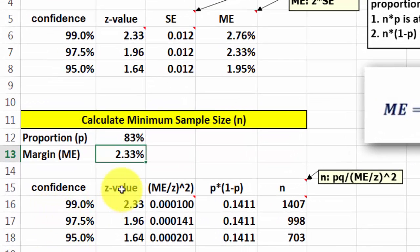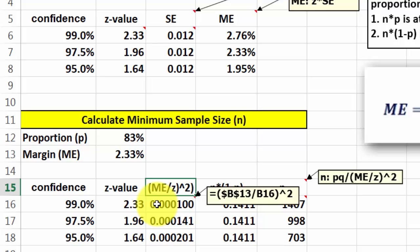First we calculate the z-value, that is NORM.S.INV again. Then we do the following calculation: margin of error divided by z, to the power of 2. So in formula, that would be this.